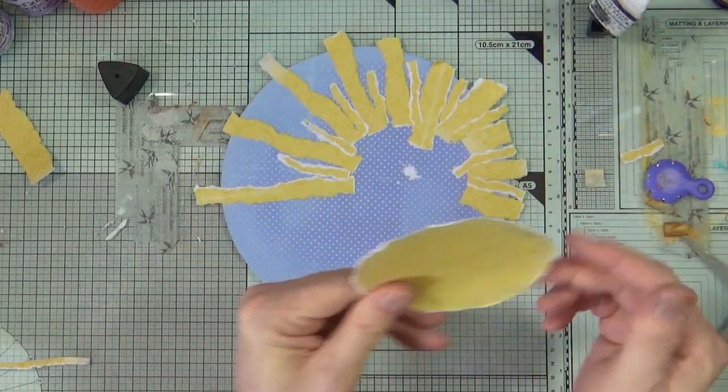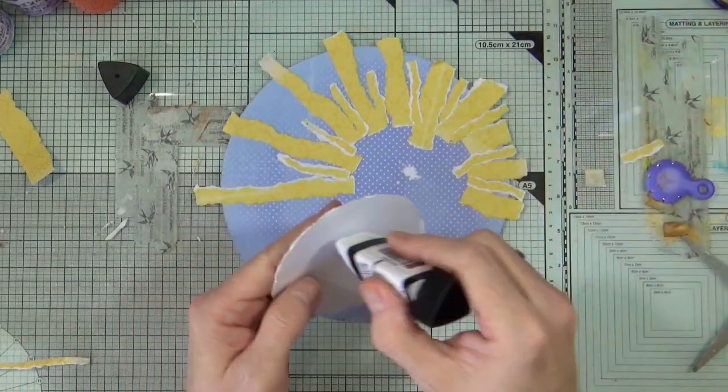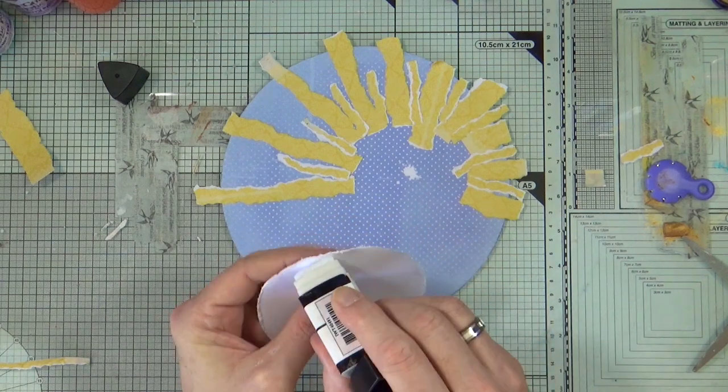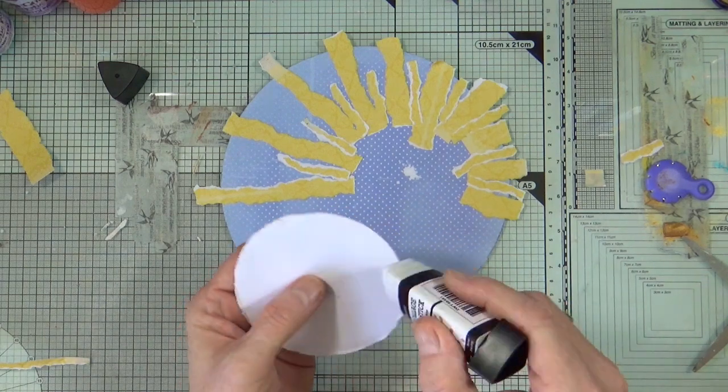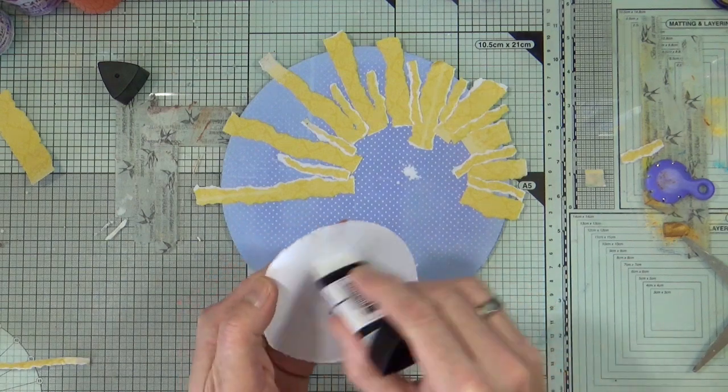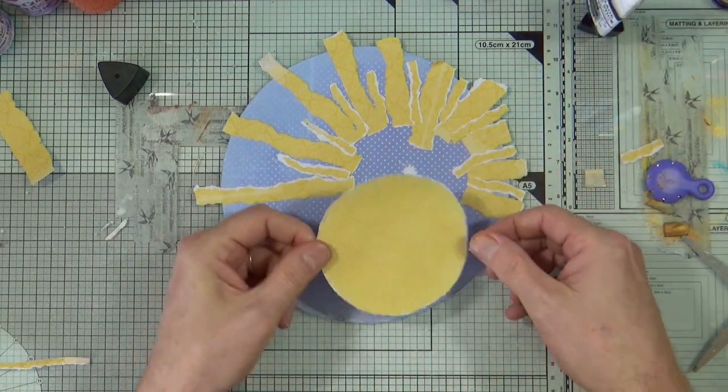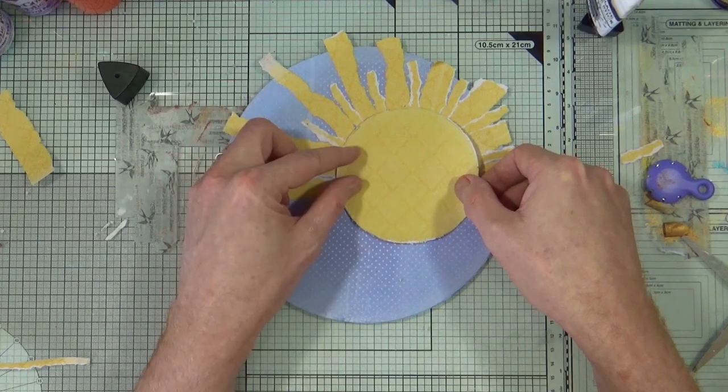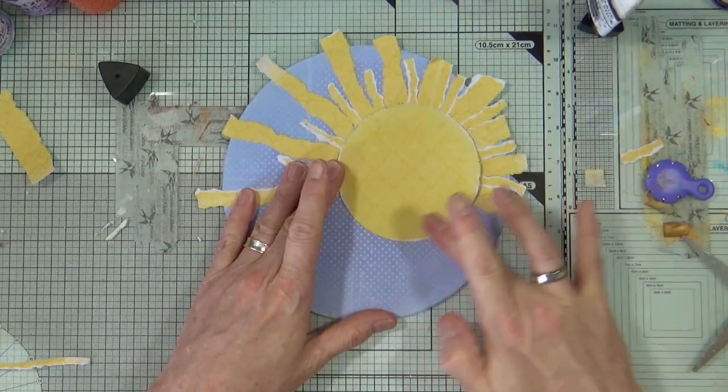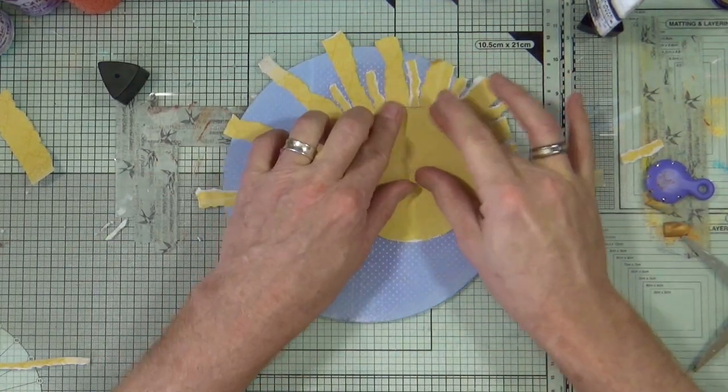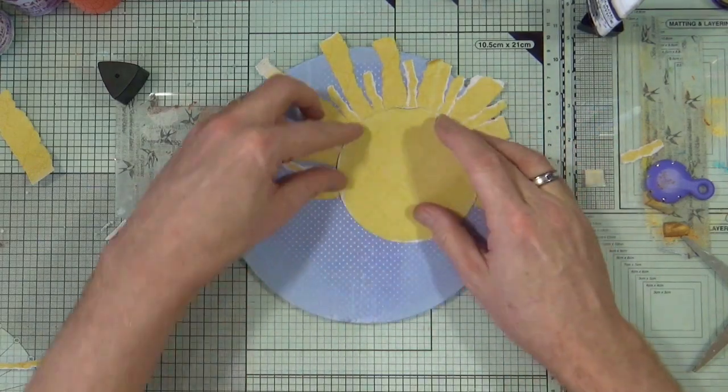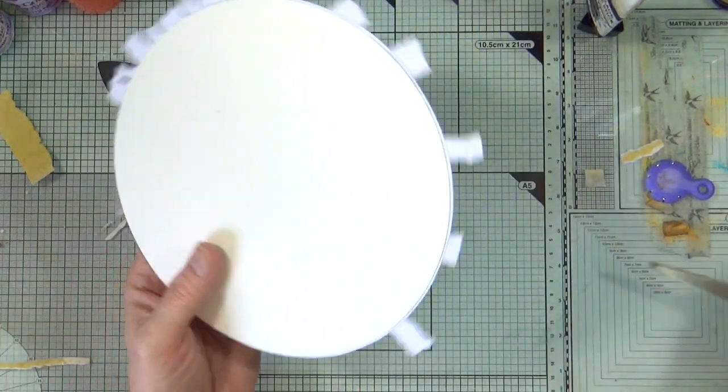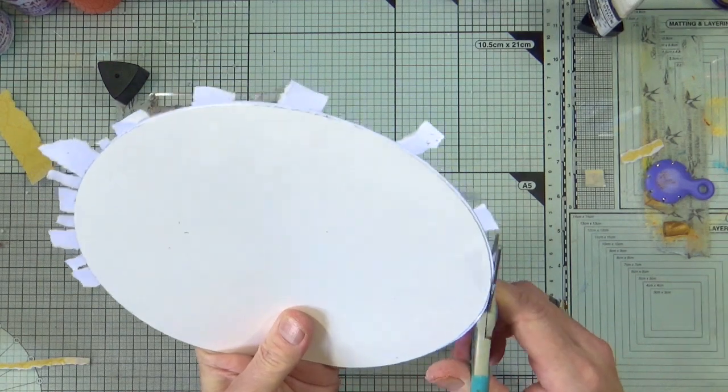Now that we're all scuffed up, I'm going to glue the disc down completely onto the page. And when I'm happy it's nice and secure, I'm going to flip the page over and then start trimming off all those excess pieces that are overhanging.